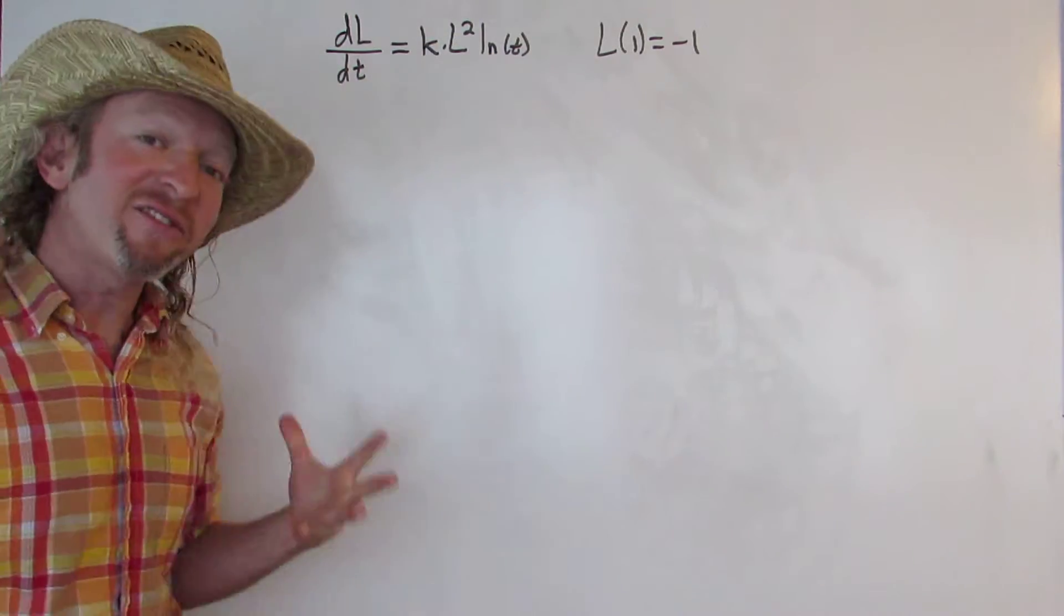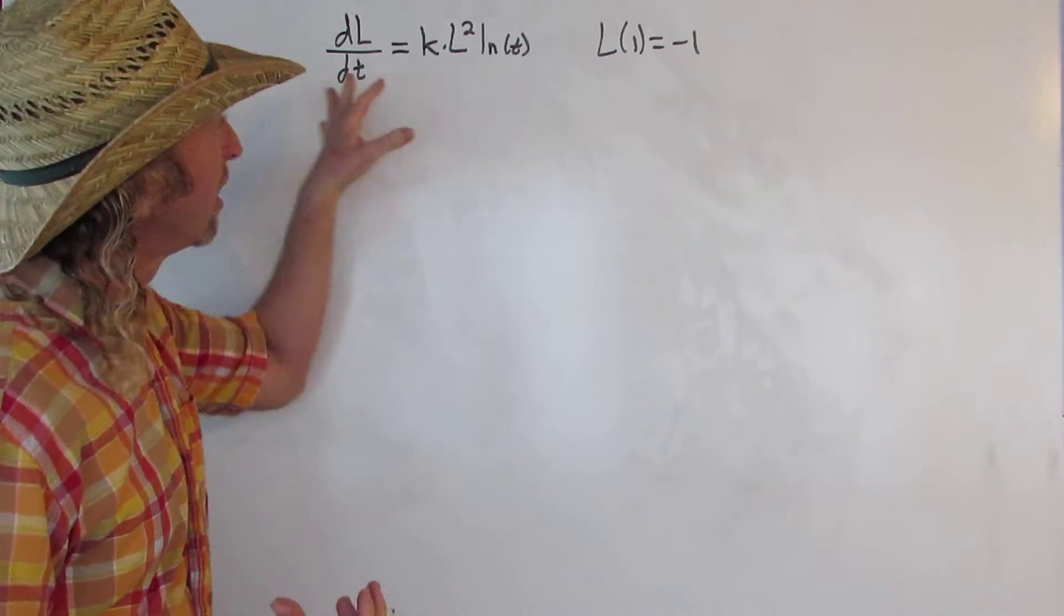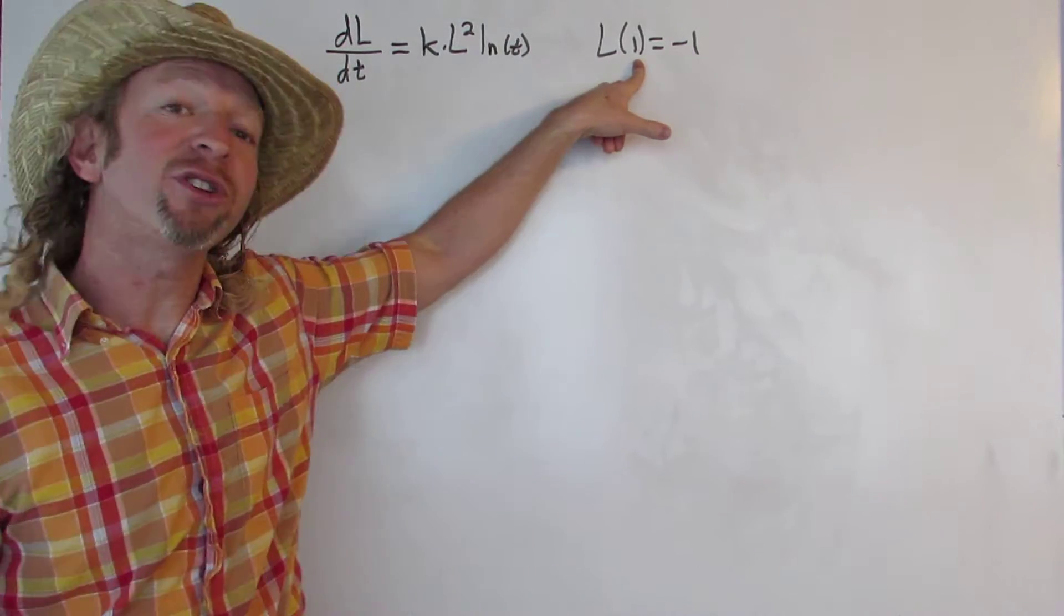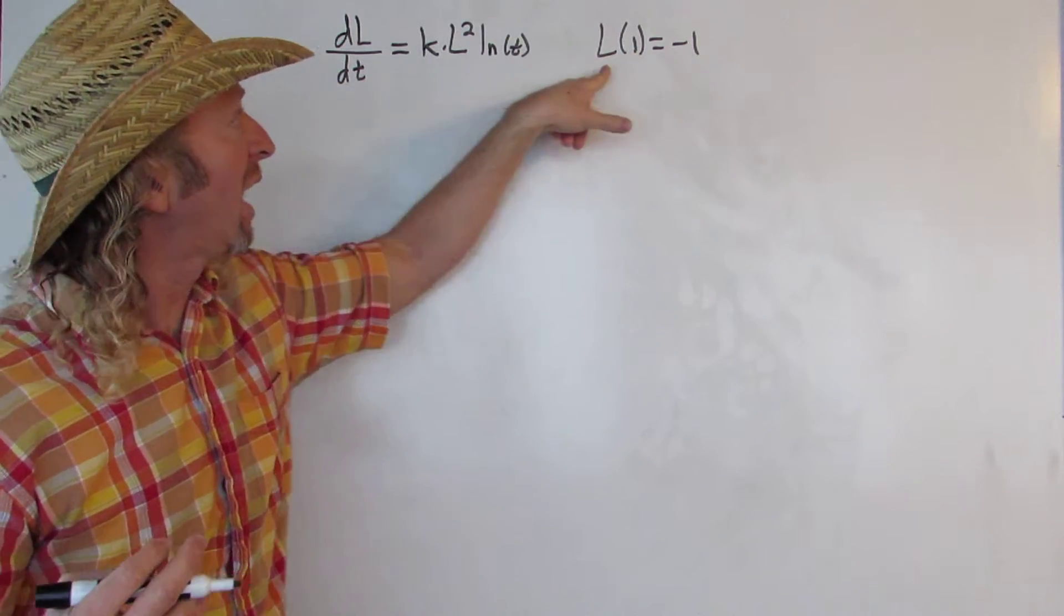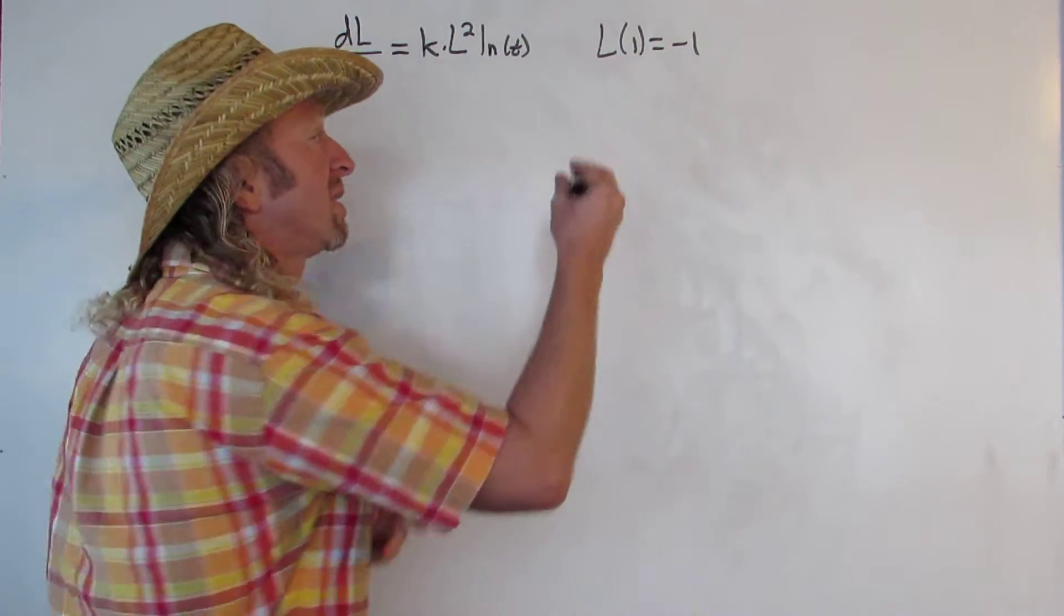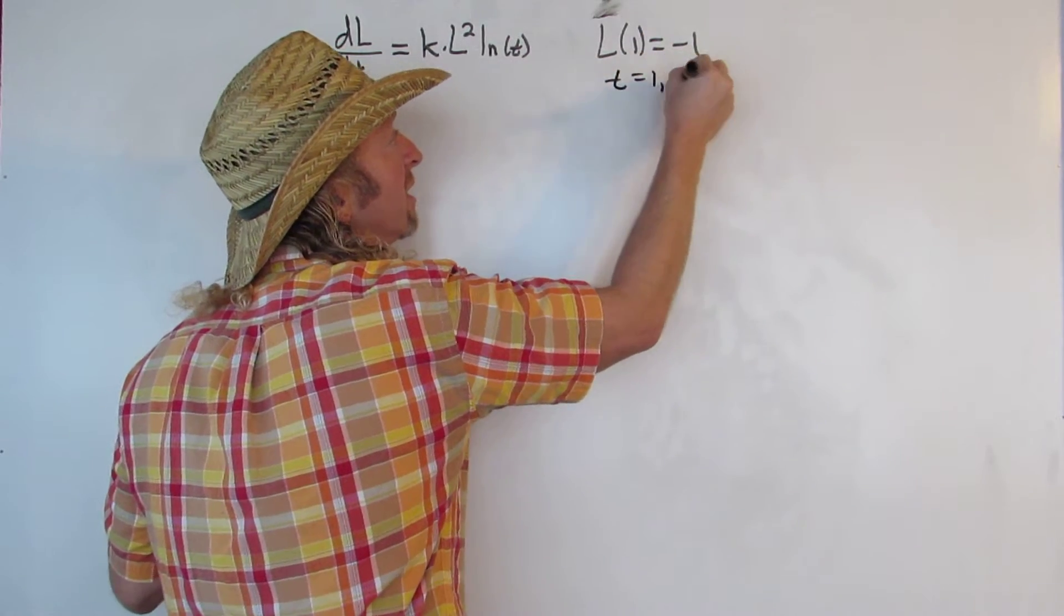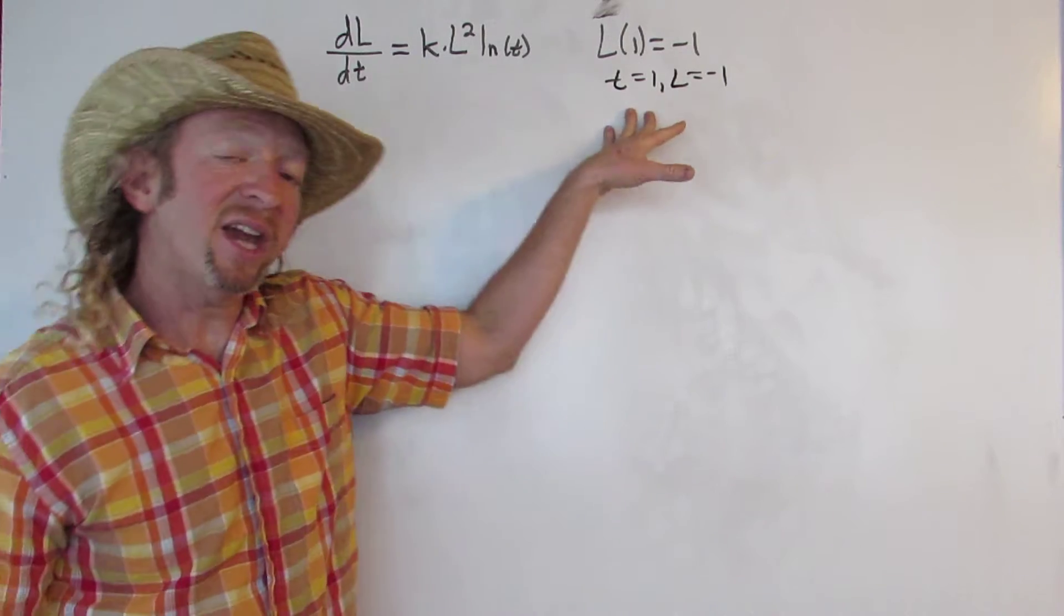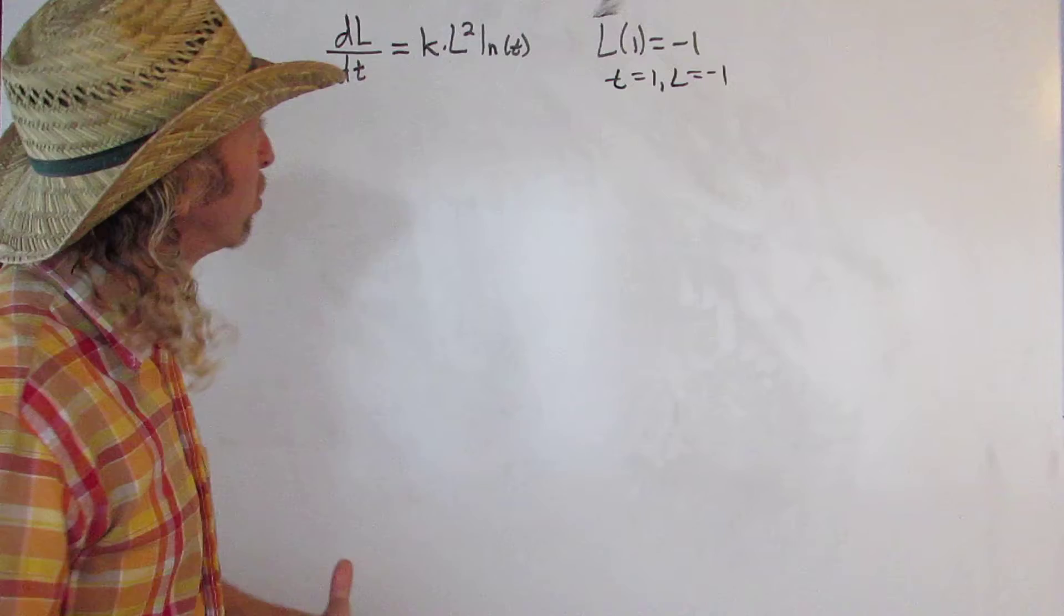Hey, what's up YouTube? In this problem we have a differential equation and we're going to attempt to solve it. So here is our equation and then here, this is called an initial condition. This is saying that when t is equal to 1, l is equal to negative 1. So we're going to solve this and at the very end of the problem we're going to use our initial condition. This is called an initial value problem.